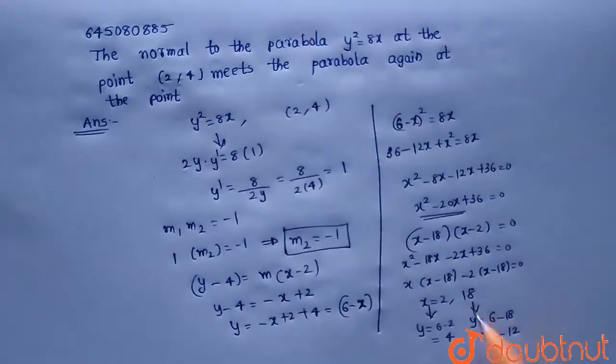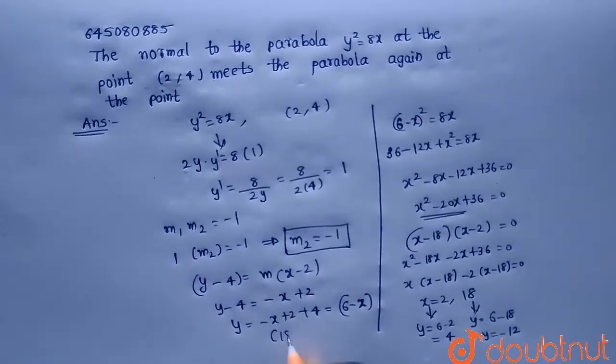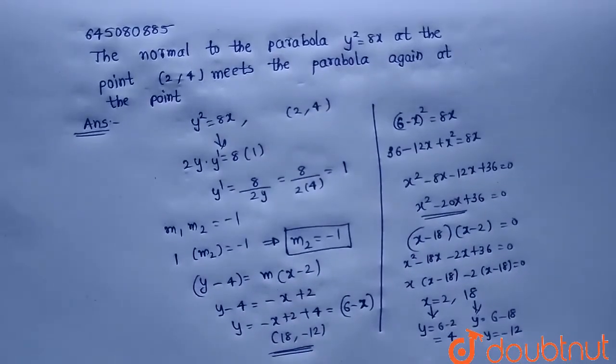(2,4) is already given. So the other point will be (18,-12). So the other point is (18,-12).